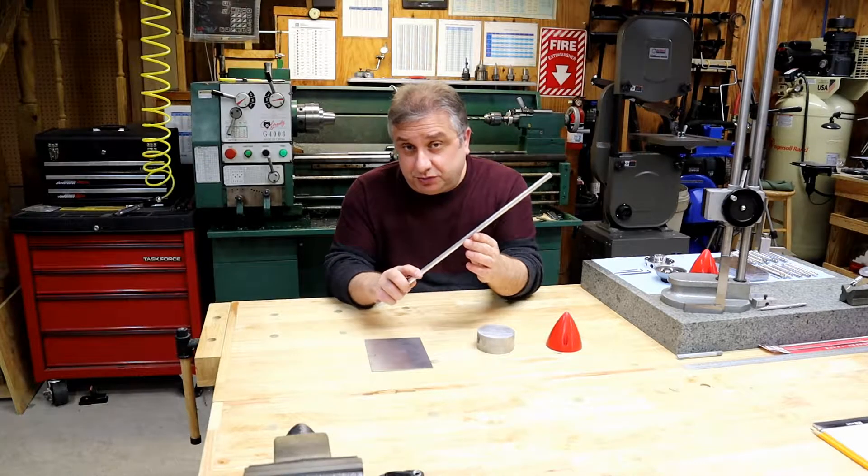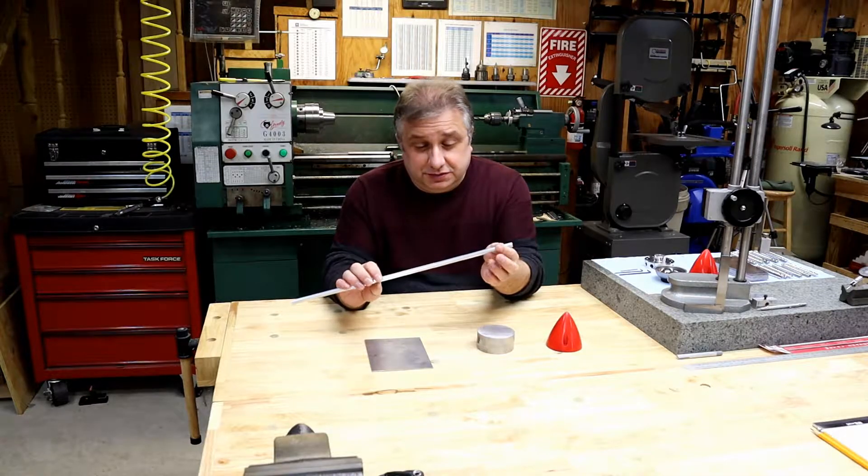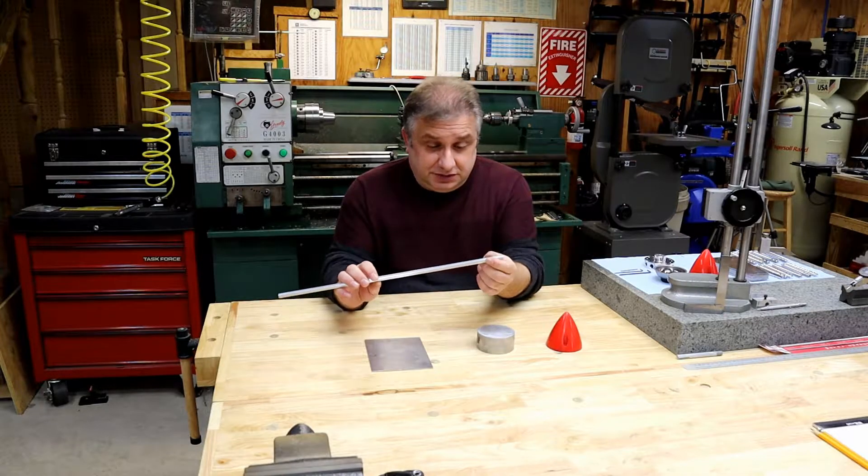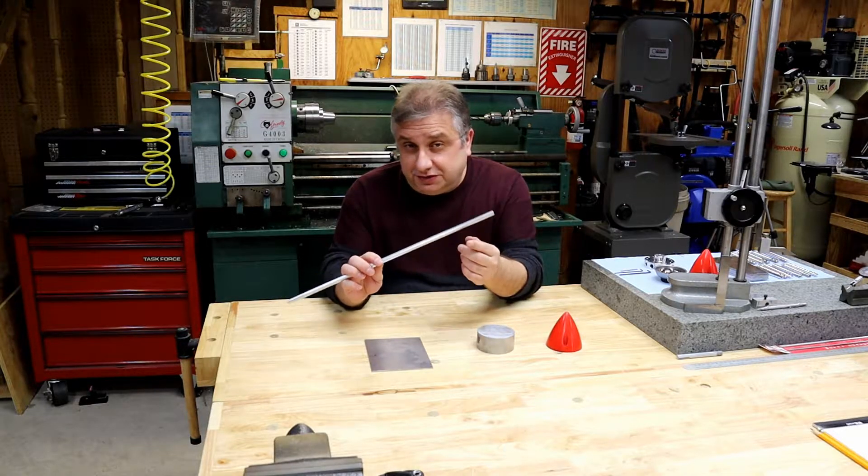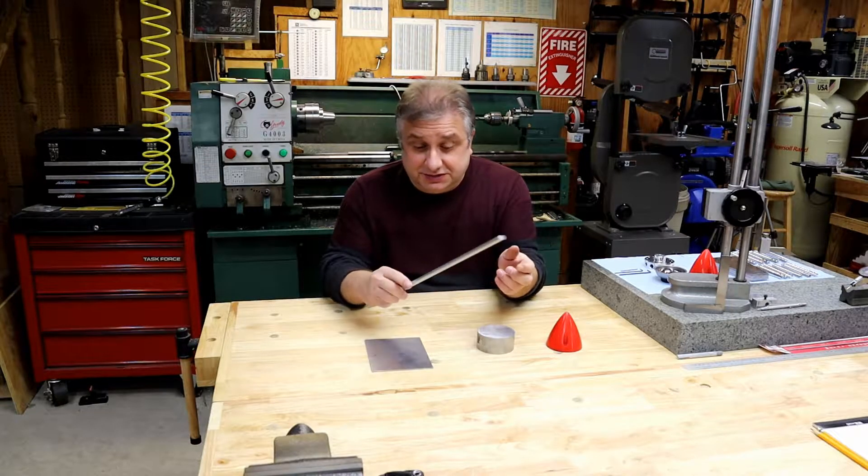The rods that support the blades are 3/8 inch diameter 6061 aluminum. To make these, I used the lathe and the Bridgeport mill. I do have a video on the channel where you can see how I actually made the connecting rods.